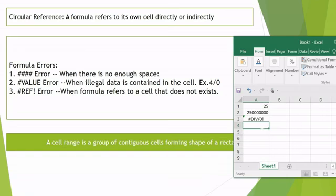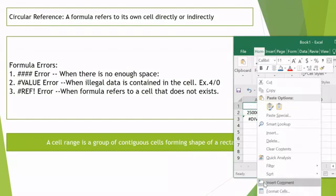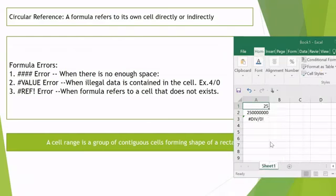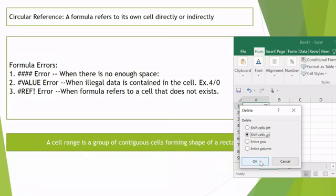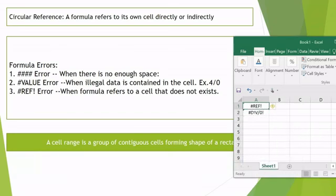Reference error: suppose if I am using over here 25 multiply by this and by any means if I am going to delete this column, I am deleting this cell, my cell is deleted so it is not finding the reference. It would need it to be multiplied with a number but it is not found, so it is giving me a reference error.